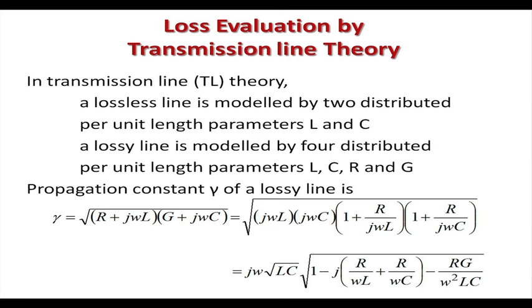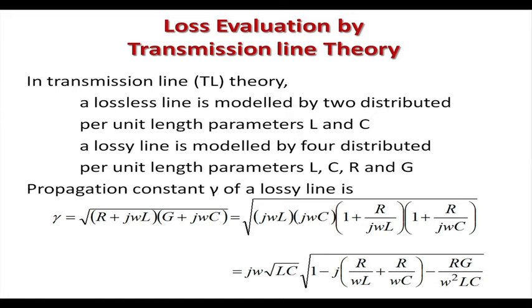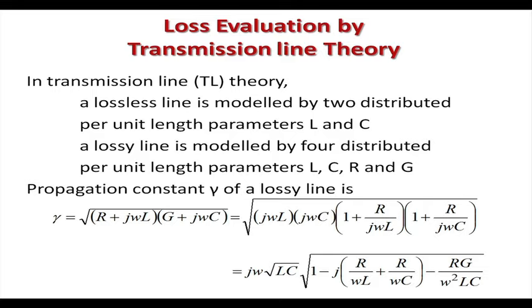In transmission line theory we learned how to model a lossless line with distributed per-unit-length parameters L and C. A lossy line is modeled by four distributed per-unit-length parameters: in addition to L and C, we need R and G. R is in series with L and G is in shunt with C.